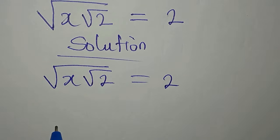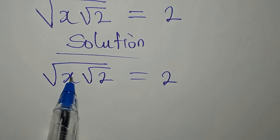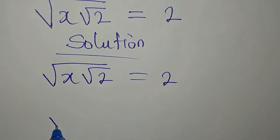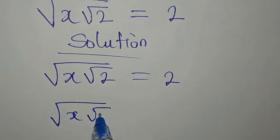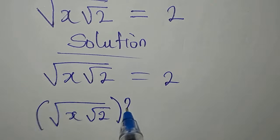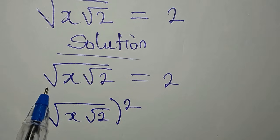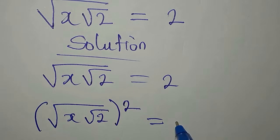Now, what do we do first? We need to remove the square root. So we have square root of x, square root of 2. We will square it, just to remove the first square root. Then we square 2.